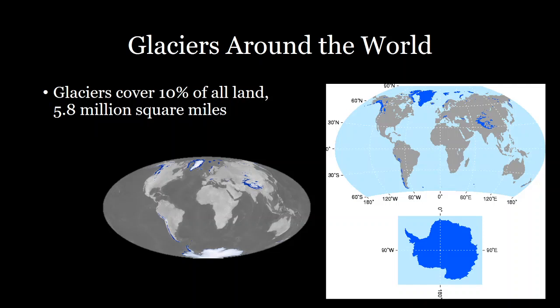We can see a map here of all the glaciers around the world. Glaciers cover 10% of all land — nothing to scoff at — that's 5.8 million square miles of ice. Most of that ice is in Antarctica, but you can also see ice all over the Himalayas, the Andes, and in Alaska. So glaciers cover a large amount of the world.